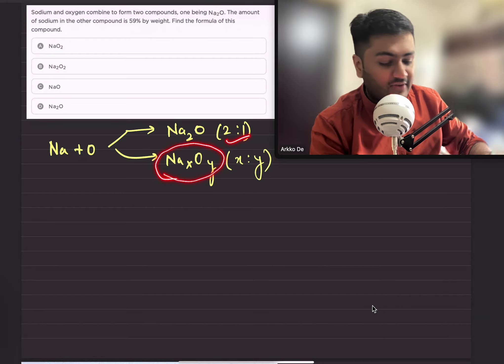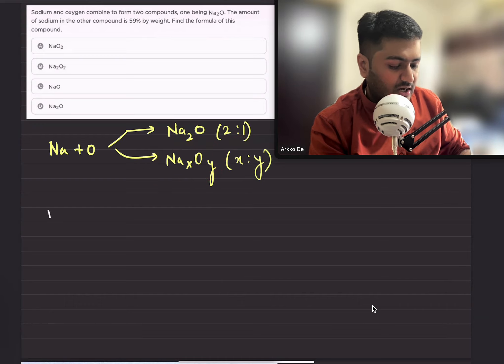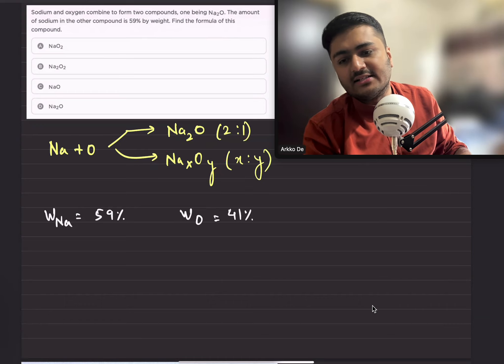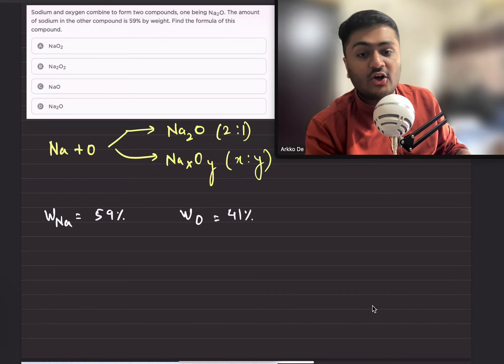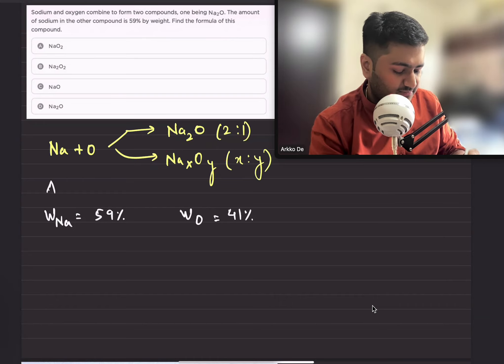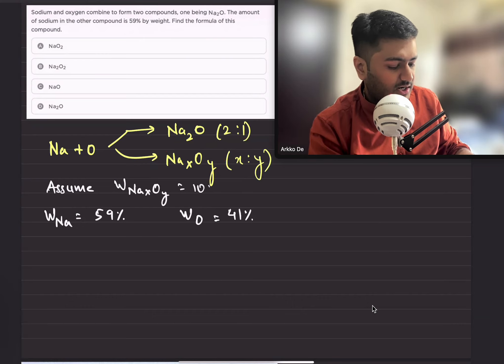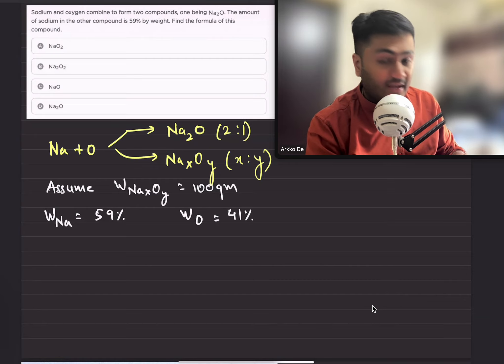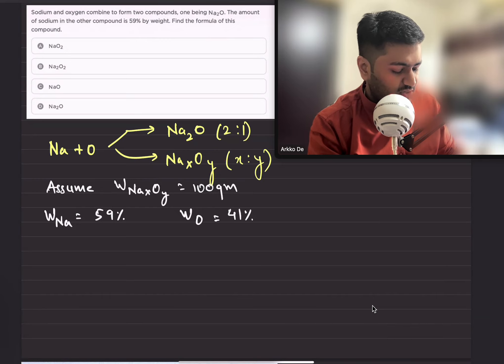is 59% by weight. So weight of sodium is 59% and weight of oxygen is 41%. If I consider the total weight of Na_x O_y to be 100 grams, then I can convert these percentages into weights. So 59% becomes 59 grams and 41% becomes 41 grams.